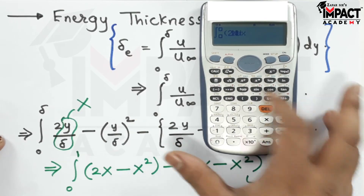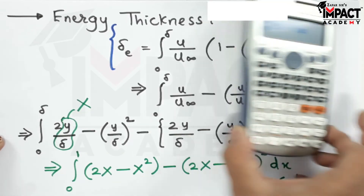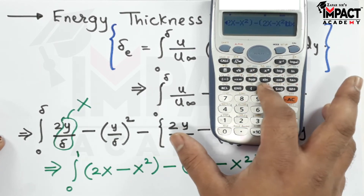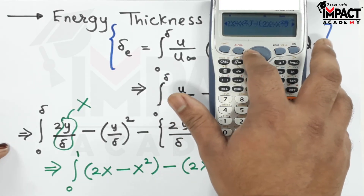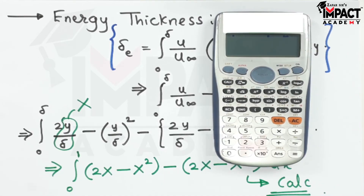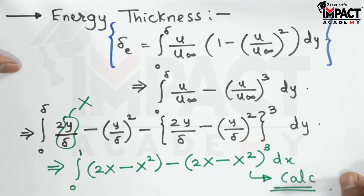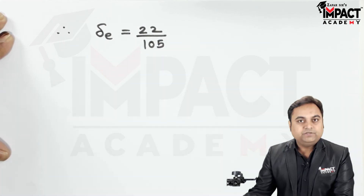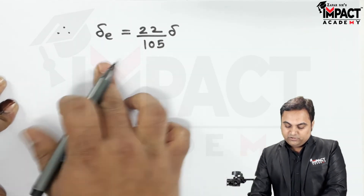On the calculator, press the integral sign, enter (2x − x²) minus (2x − x²) raised to cube, set limits 0 to 1, and press equals. The answer is 22/105. Therefore, energy thickness delta_e = 22δ/105, where 22/105 is the coefficient multiplied by delta.